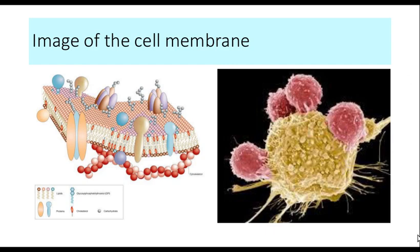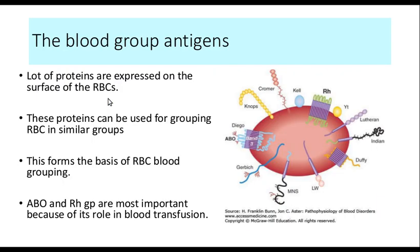This is a picture of how a cell would look like under the scanning electron microscope. If you look at this surface you find many of these small modular structures. These structures are various compounds which are expressed on the cell's surface membrane — they could be proteins, carbohydrates, or complex lipids. A lot of proteins and other substances are expressed on the surface of the RBC membrane as well, because that is also a cell.